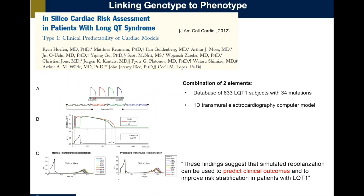In a similar way, this other paper shows the use of a computer model to predict cardiac risk in patients with a genetic mutation. This paper is very important because it combines a clinical database of 633 subjects with 34 mutations and a one-dimensional transmural electrocardiography computer model that is actually a very poor representation of these subjects. However, the authors use it as a tool to predict clinical outcomes and to improve risk stratification in patients with LQT1. So this paper moves us from the use of computer models in basic science to a translational use — models considered as tools to allow prediction of cardiac risk.